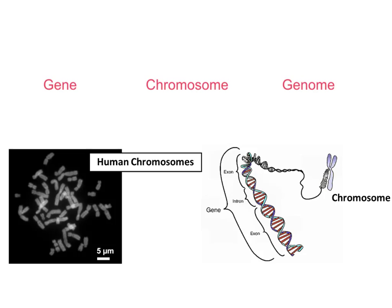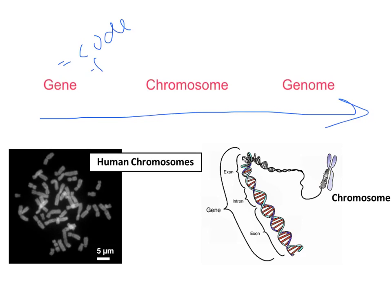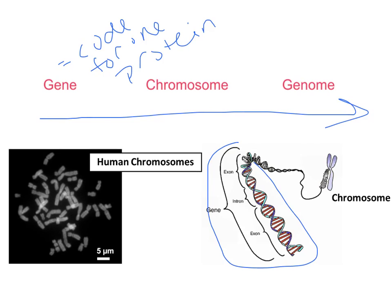Let's do a little bit of vocabulary review. As we're looking at DNA in our chromosomes, we're increasing in size. A gene codes for one protein, and so it's going to be a portion of a chromosome. In the zoomed-in picture on the right, I can see a gene versus a chromosome — my gene that codes for one particular protein is just a small section of the chromosome.